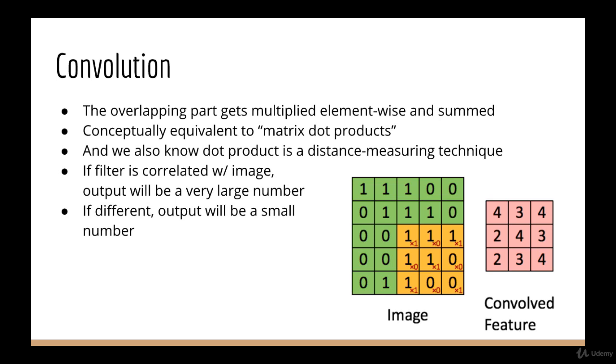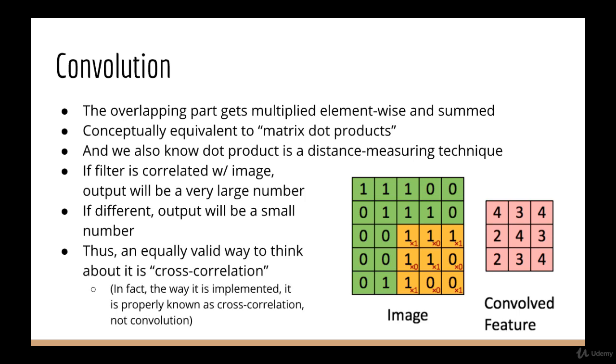In actuality, what we call convolution in deep learning is actually more correctly known as cross-correlation. So for some people, this is a really helpful analogy because convolution can seem like a weird exotic concept. But really what you're doing is just going over every part of the image and saying, hey, how correlated are you to this filter? That's pretty much it.